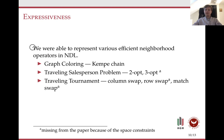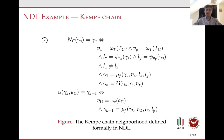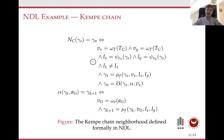In our paper, we were able to represent various efficient neighborhood operators in NDL. The first is the Kempe chain, a very common and effective neighborhood for graph coloring, along with two-opt for the traveling salesman problem, and column swap for the traveling tournament problem. Here is an example of the Kempe chain definition in NDL. I know it is quite verbose, but remember it is a formal language made for low-level representation and to be automatically processed, not for humans. A real implementation could hide those low-level details.